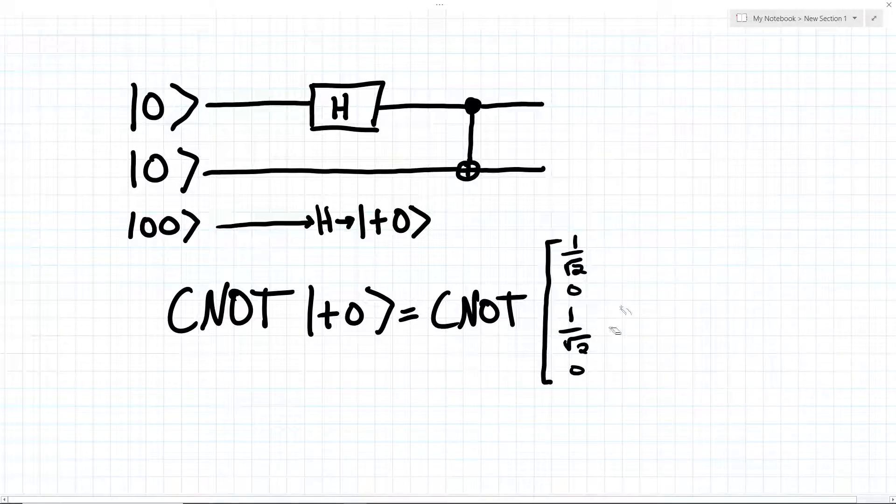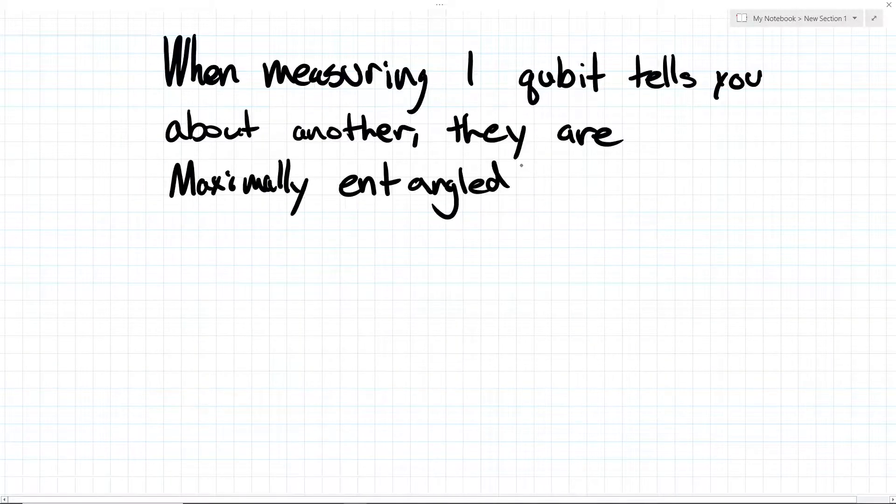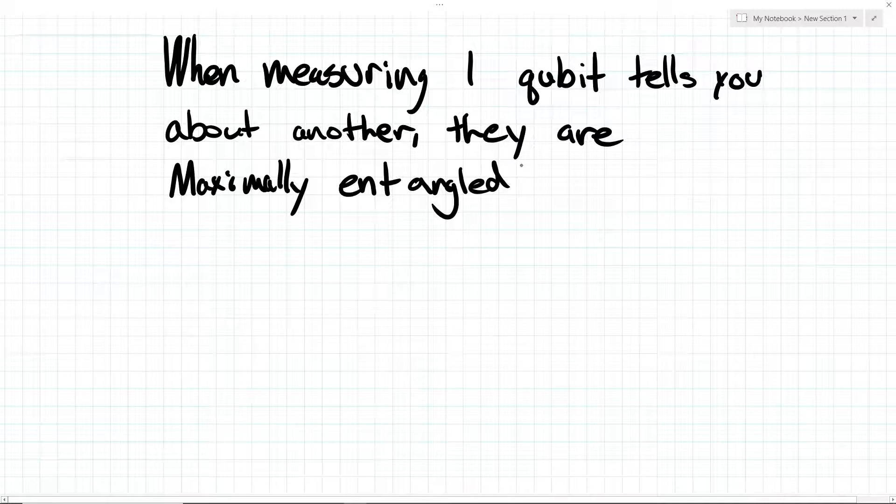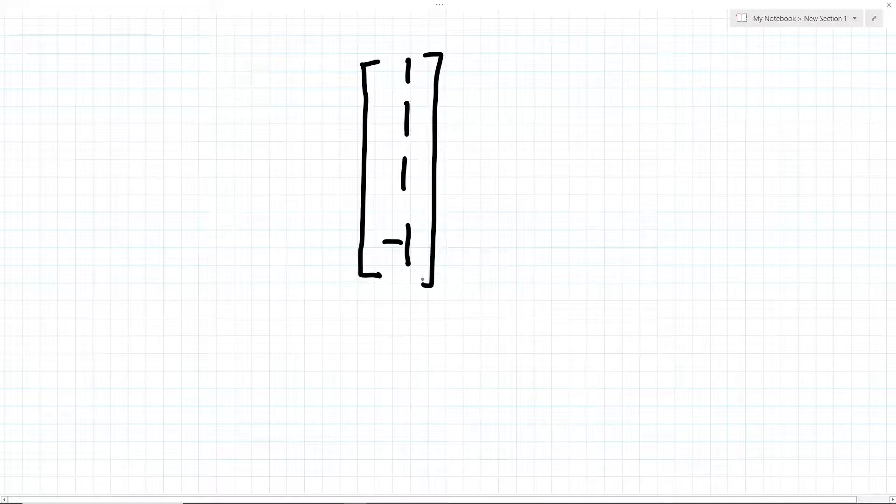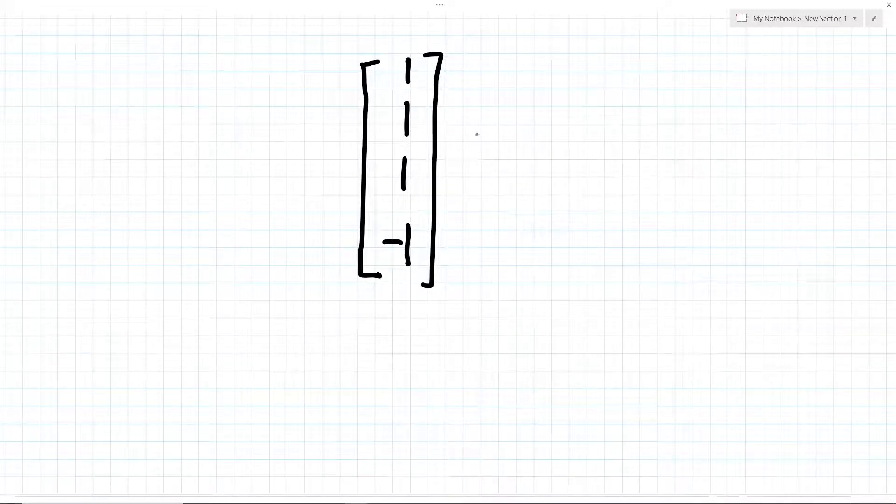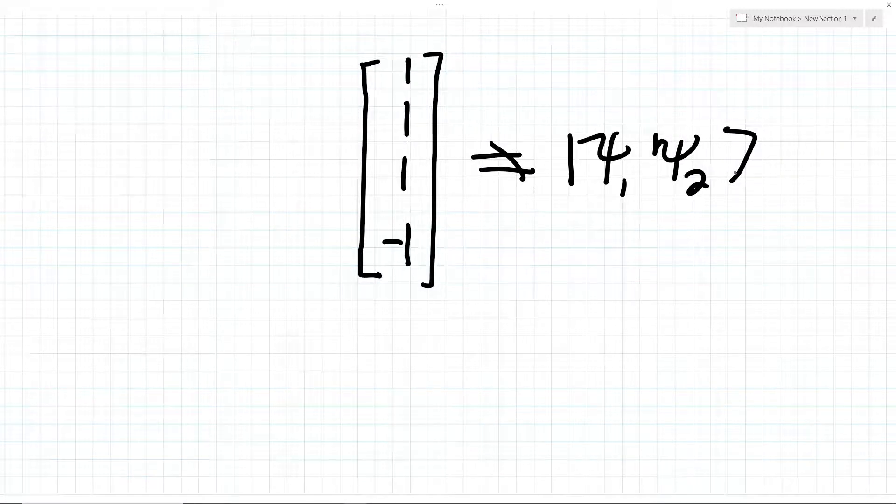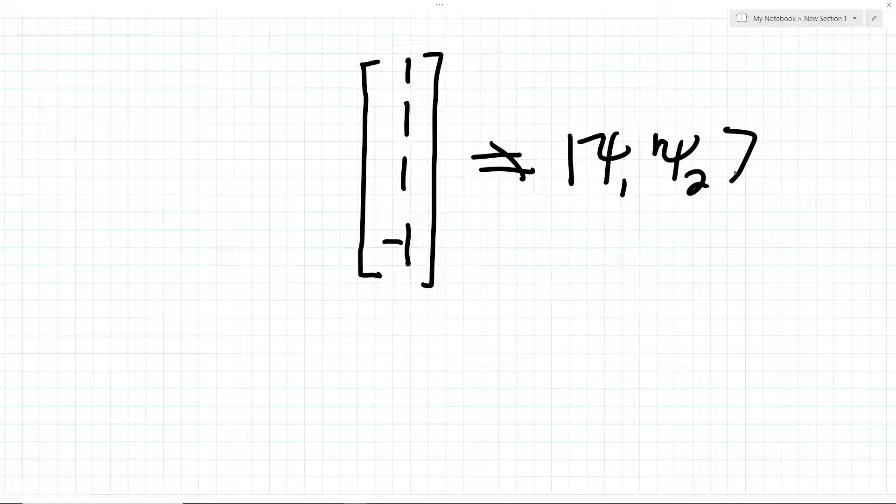If you watched the last video on qubits, you may remember this state. Notice how measuring one qubit will tell us what the other qubit is. They are entangled. And all it takes to produce this entanglement is two quantum gates. This type of entanglement, where measurement informs you about the other qubit, is called a maximally entangled state. There are actually many entangled states which are not maximally entangled. For example, a state like this is entangled because its state vector cannot be decomposed into two individual state vectors. However, you would not learn anything about one qubit from measuring the other. This kind of state sounds not very useful. However, non-maximally entangled states are super common and even play a role in Grover's algorithm, which I will be introducing soon at the end of this video.